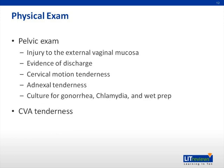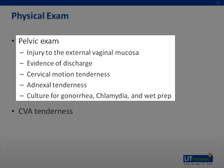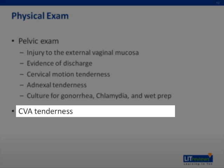When indicated — and in the young female with lower abdominal pain it most likely is — perform a pelvic examination. Start with evaluation of the external vaginal mucosa, looking for any injury. Then perform a speculum exam, looking for evidence of discharge, pus, redness, or tenderness. Do a bimanual exam looking for cervical motion tenderness and adnexal tenderness. During the speculum exam, make sure to take cultures for gonorrhea, chlamydia, and wet prep. Finally, tap on the back to look for CVA tenderness, which could indicate pyelonephritis or a ureteral stone.